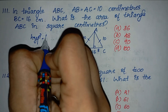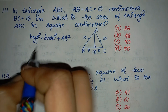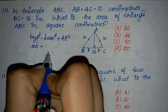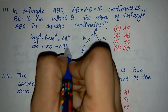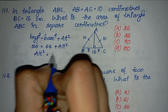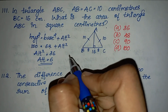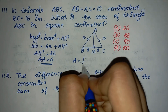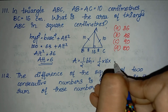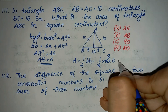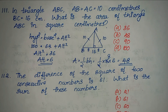Using the Pythagorean theorem: hypotenuse square equals base square plus altitude square. So 10 square equals 8 square plus altitude square. That is 100 equals 64 plus altitude square, giving altitude square equals 36, so altitude equals 6. Area equals half times base times height equals half times 16 times 6 equals 8 times 6 equals 48 square centimetres.